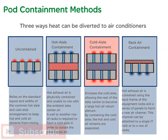Server exhaust heat can be diverted back to the air conditioners in a few different ways: uncontained, hot aisle containment, cold aisle containment, and rack air containment. All of these methods leverage a row-based cooling concept.